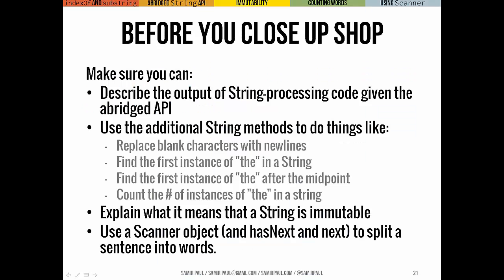Before you close up shop, here are the big things. You want to be able to describe the output of string processing code if I give you the abridged API. I don't need you to memorize all those methods necessarily. Eventually, you probably will have a lot of them memorized just from using them. You want to be able to use those string methods that we talked about today in order to do little tasks like replacing all the blank characters with new lines. And remember, because strings are immutable, that really means building a new string with new lines instead of spaces. Or finding the first instance of the word the in a string, or finding the first instance of the word the after the midpoint, or counting the number of instances of the word the in a string. Tell me what it means that a string is immutable. And finally, use a scanner object, using its methods hasNext and next, to split a sentence into words.